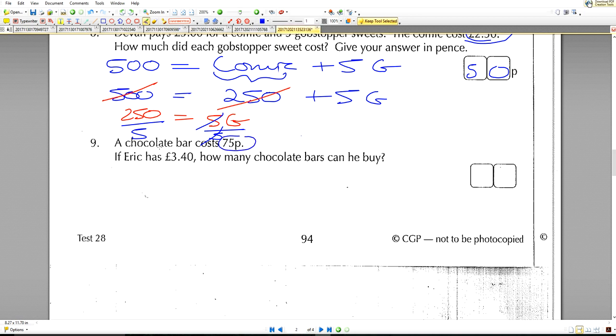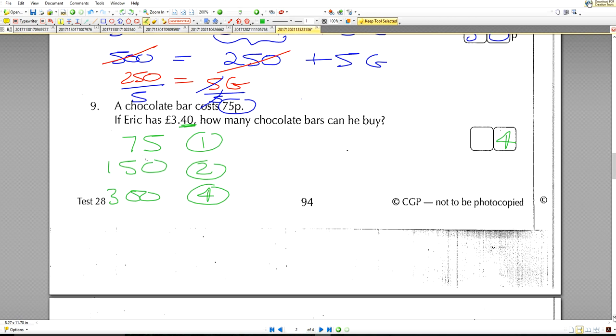A chocolate bar costs 75p. If Eric has £3.40, how many chocolate bars can he buy? So 75p is what we're starting with. So 75, if we double that, we get 150. So that's one bar, that's two bars. Now if you double the 150, we get 300. And that will give you the cost of four bars. Now you can't fit any more bars in there because you've got 40p left here. And each bar costs 75. So the answer will be four. We don't need to do anything elaborate here, apart from just doubling the numbers, looking at the number bonds.